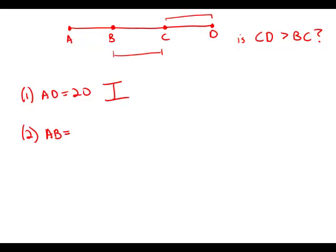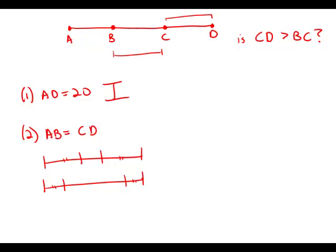Statement 2 tells us that AB equals CD — so the two outer segments are equal. But what does that mean about the length of the one in the middle? We could have the ones on the outside being relatively large and the middle one being small, or the two on the outside being relatively small and the one in the middle being large. We have no way of knowing how the one on the end compares to the one in the middle just given that the two ends are equal. So this statement by itself is insufficient.